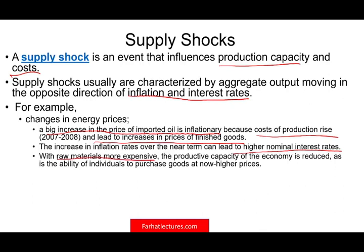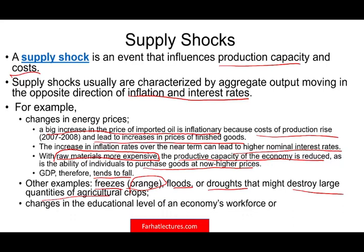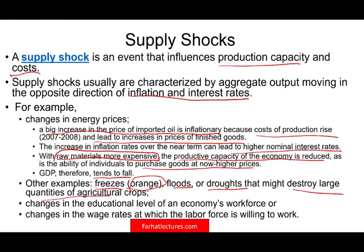With raw materials more expensive, the productive capacity of the economy is reduced because individuals' purchasing power is diminished at higher prices. Prices go up, you buy less, and the cost of production rises — not a good combination. Therefore, GDP tends to fall during a supply shock. Other examples include freezes and floods, like freezes destroying orange crops; droughts destroying large quantities of agricultural crops; changes in the educational level of the workforce; or changes in wage rates. If the cost of labor goes up, the cost of production goes up, just like the cost of oil.